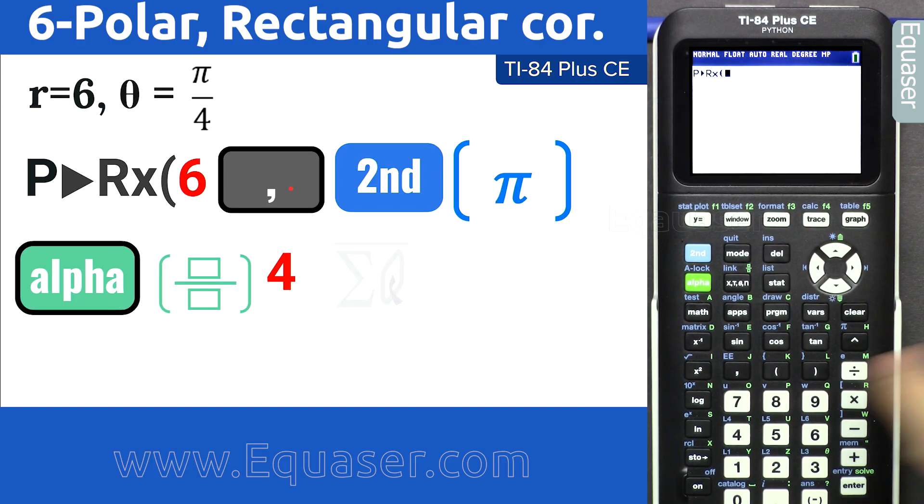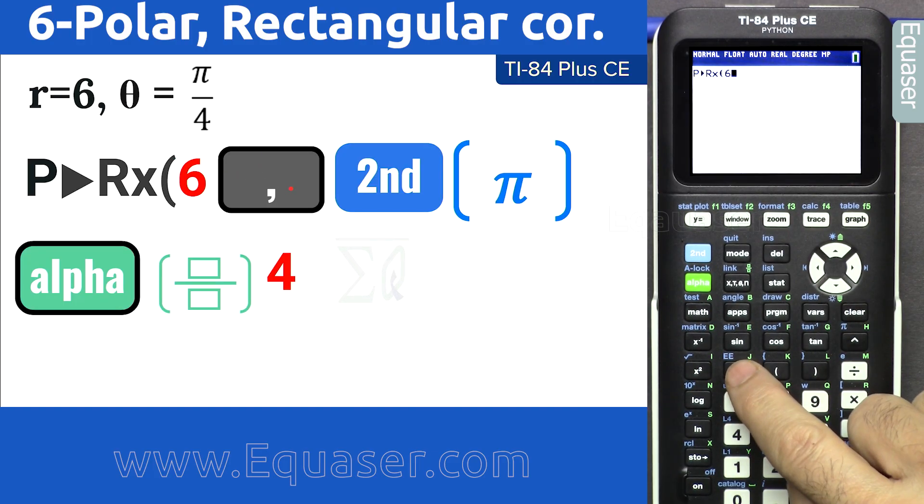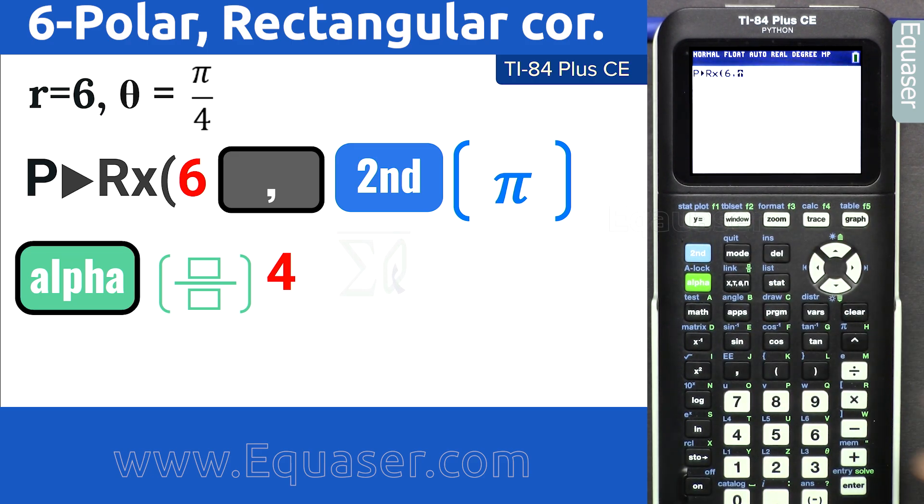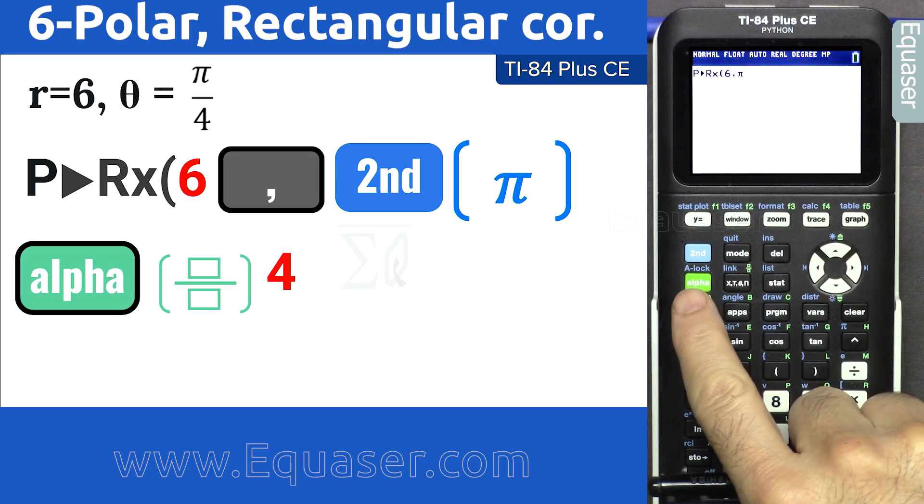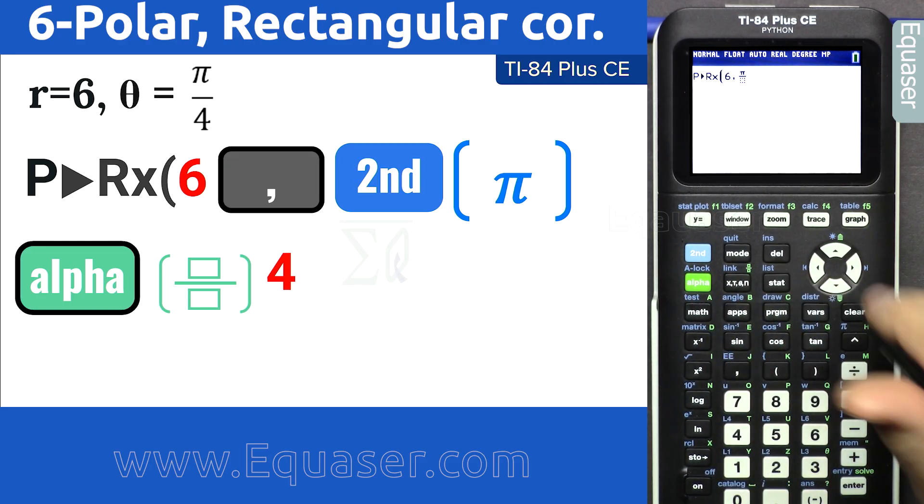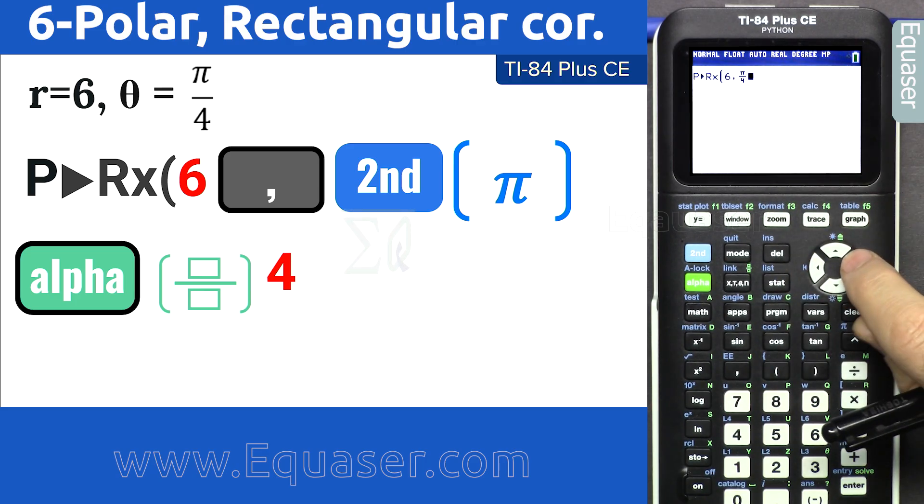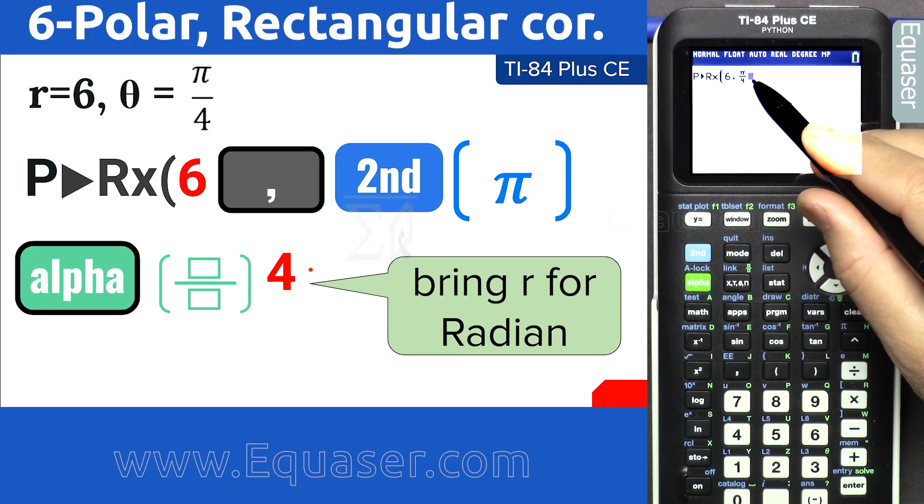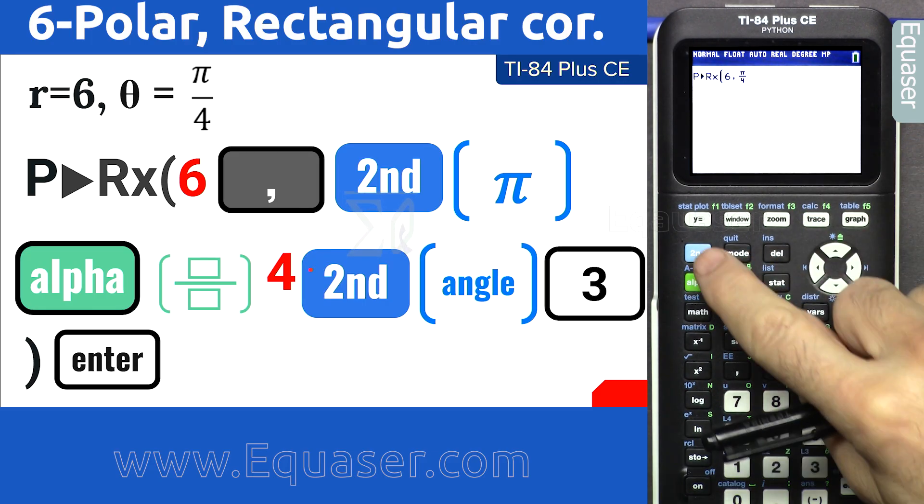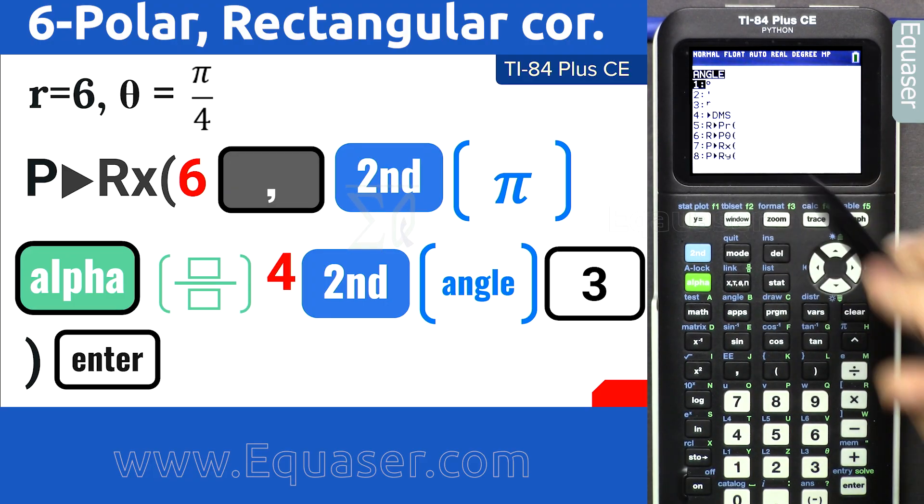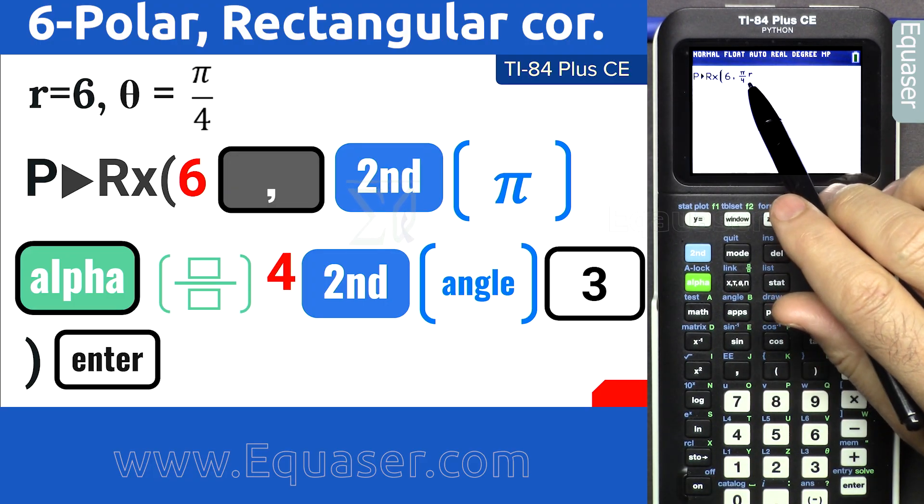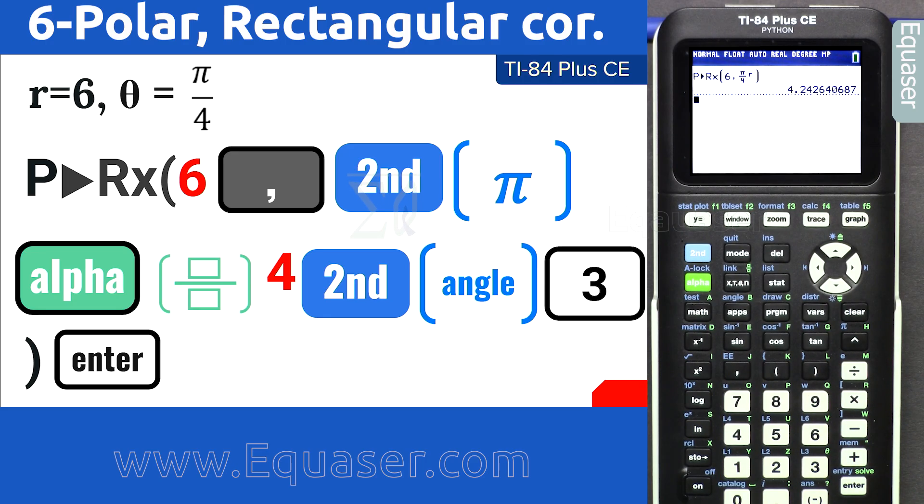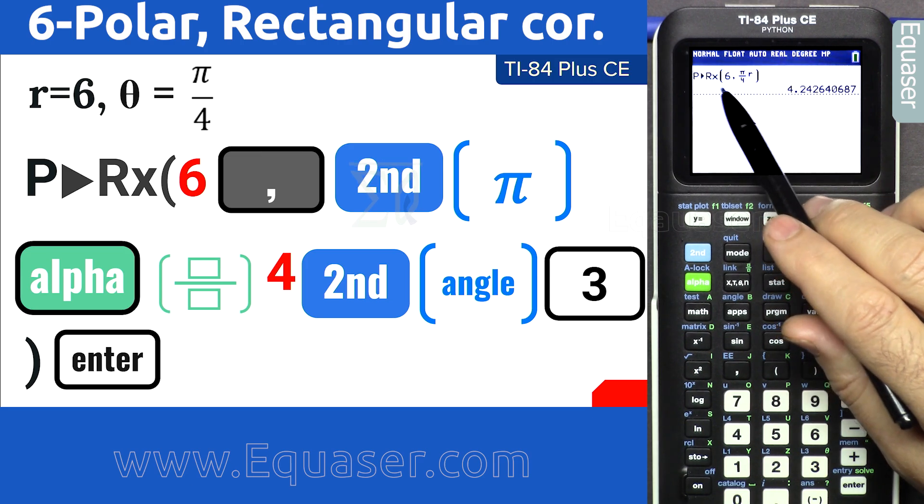Enter 6, comma, second function π. For π we press this button, and then bring the fraction function over 4. With the arrow, go to the right. Now let's bring r here for radian. Second function angle and then number 3 r, close it and enter. We got 4.2426. That is value for x.